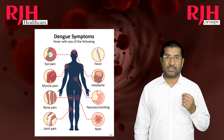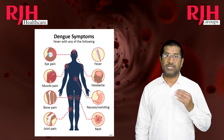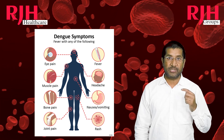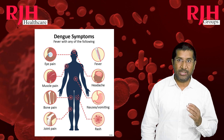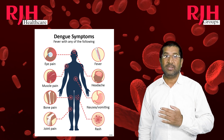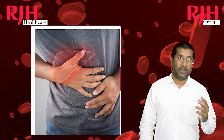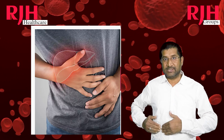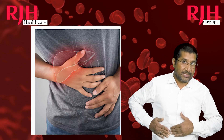In severe cases, platelets may fall to very low levels and the patient may suffer from hemorrhagic shock due to bleeding from various regions. In some cases, there may be jaundice due to Dengue hepatitis. Most commonly in the pediatric age group, we may notice right-side subcostal tenderness — this is where the liver is. When we press here, there will be tenderness in this region.